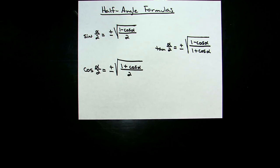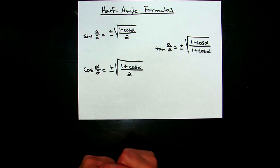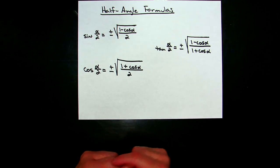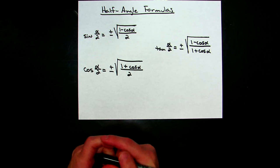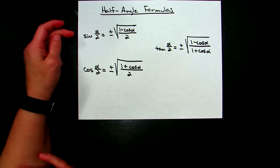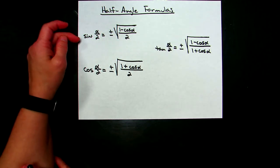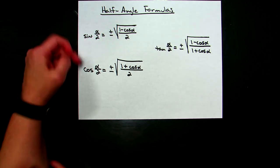Today we're going to take a look at some half-angle formulas — formulas that we use in trig. We're going to look at just the ones for sine, cosine, and tangent.